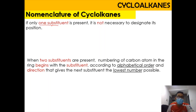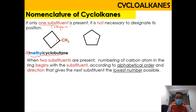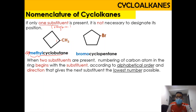For the nomenclature of cycloalkanes, if there is only one substituent on the ring, it is not necessary to designate its position number. For example, if we have a cyclobutane with a methyl group CH3 attached, you can name it simply as methylcyclobutane — you don't have to write '1-methylcyclobutane.' Similarly, a cyclopentane with a bromine substituent is just bromocyclopentane, not 1-bromocyclopentane.